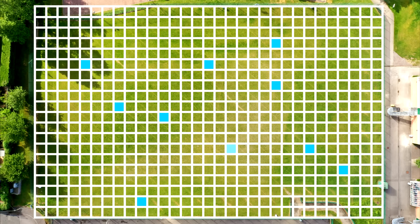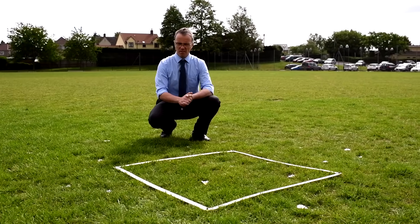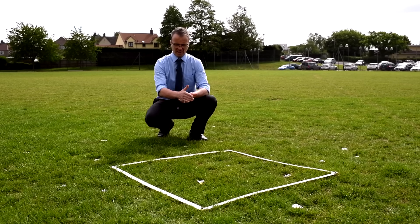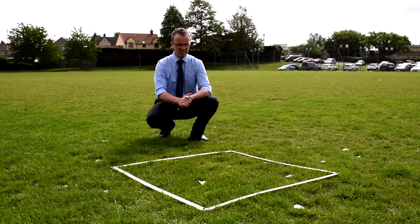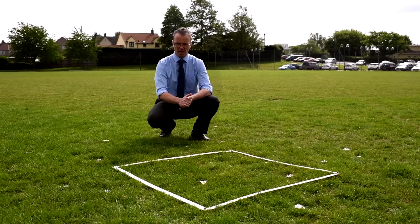You then place your quadrat at those positions and count the number of chosen organisms, which in our case is our unique species of flower, Daseus paperalis. Once your quadrat is positioned you need to count the organisms — in this case six daisies in the one meter square.